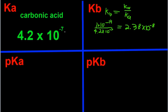Now let's figure out the pKa. We know Ka is 4.2 times 10 to the negative 7, so pKa is going to be the negative logarithm of 4.2 times 10 to the negative 7.